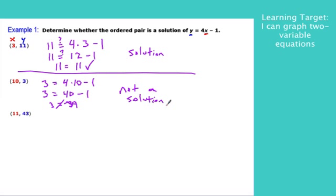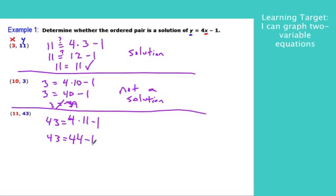All right, last one, 11, 43. You know, 43 gets plugged in for Y. 11 gets plugged in for X. So I'll do 4 times 11 minus 1. And you're going to probably see pretty quickly here that this is, but we do need to go all the way to the end, get a number equaling a number. This is a solution.